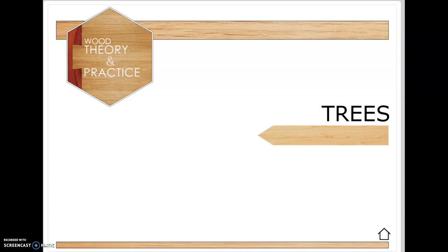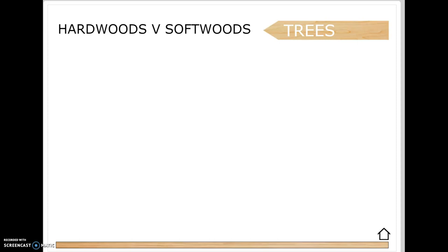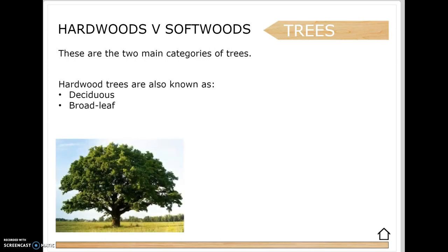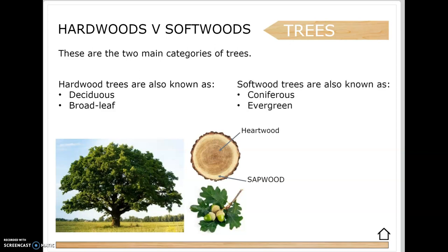Today we're going to look at trees. We have two types: hardwoods and softwoods. Hardwoods are known as deciduous or broadleaf trees - they shed their leaves and grow them back, which is a main characteristic. You'll see your heartwood around the center of the tree and the sapwood around the outer edge. In broadleaf trees, the heartwood is a different color to the sapwood and is generally a bit tougher.